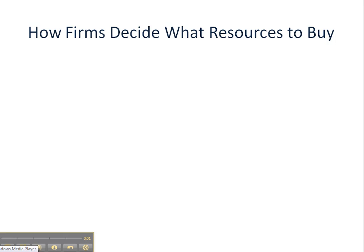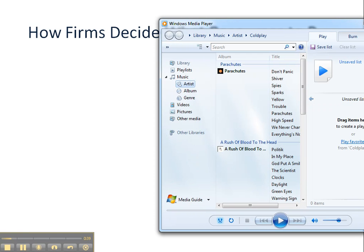Hi folks. This video is about how firms decide what resources to purchase. This will be the first of a two-part video. In this one we are going to figure out Marginal Product or Marginal Physical Product, MPP, which should be a review because we've done that when we started our unit on theory of the firm. And then we're also going to learn how to figure out something called MRP, which is Marginal Revenue Product — the first step towards analyzing how much resources firms should buy.